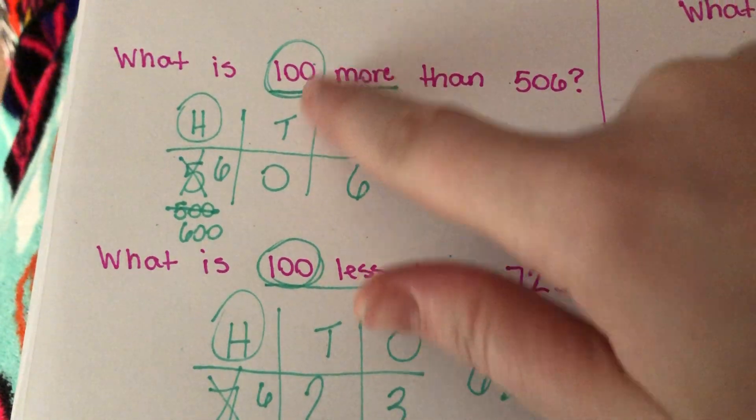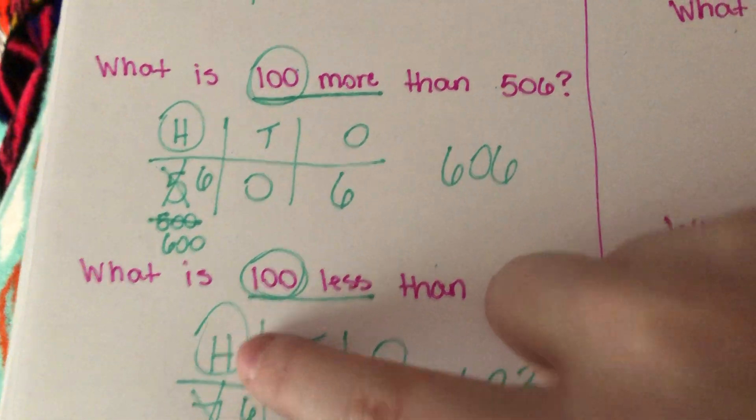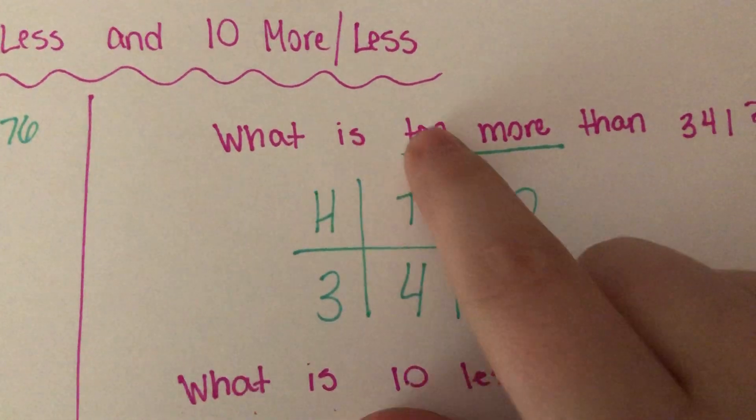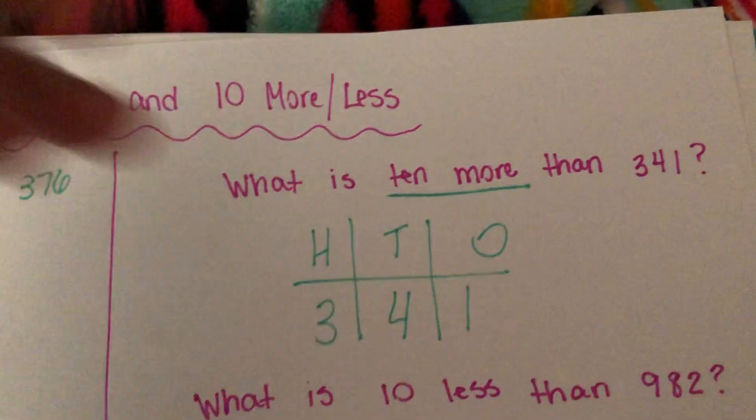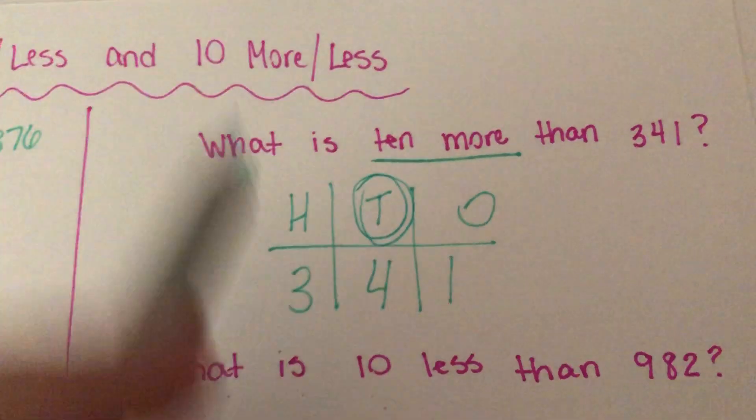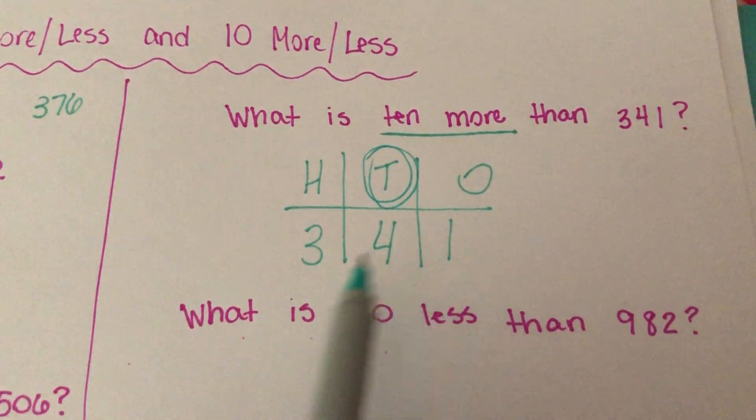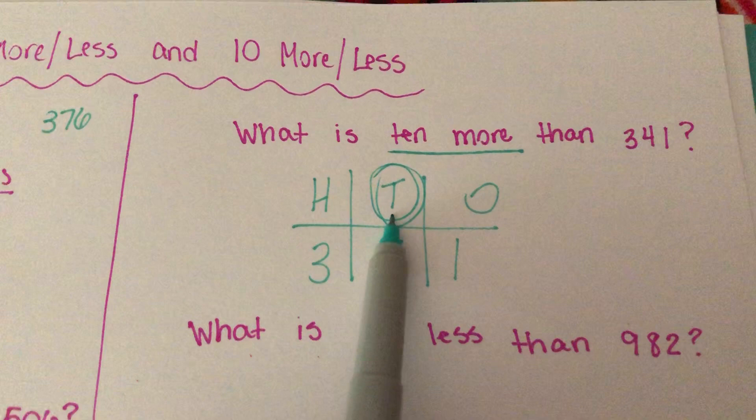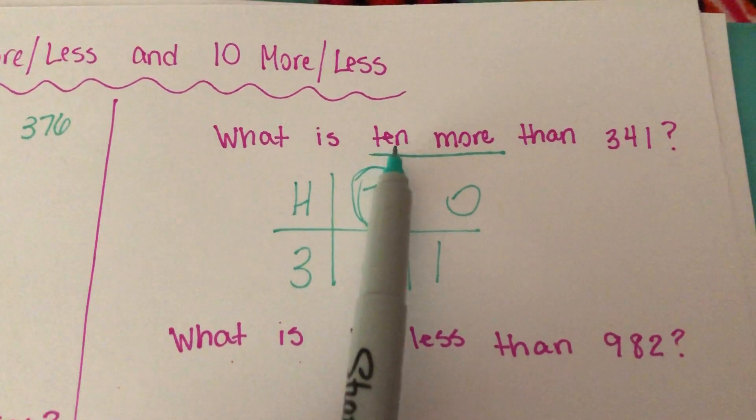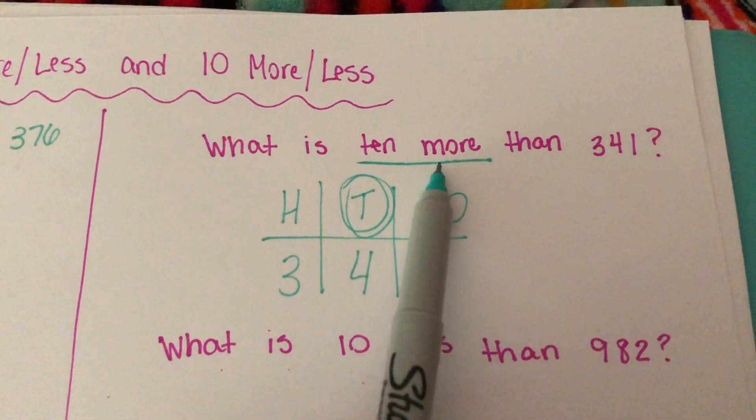Now, we are not looking for 100 more. Down here, we said we're looking in the hundreds, so we need to look in the hundreds place. If it's asking for 10 more, we need to look at the tens place. The hundreds place is not changing. The ones place is not changing. The only number that's changing is the tens place because we're only looking at the 10. We're looking at 10 more.